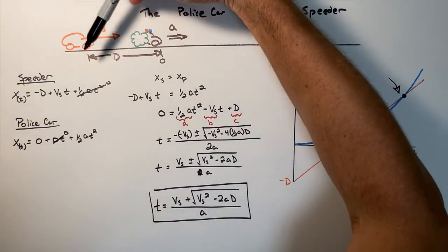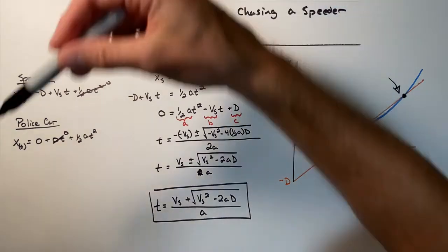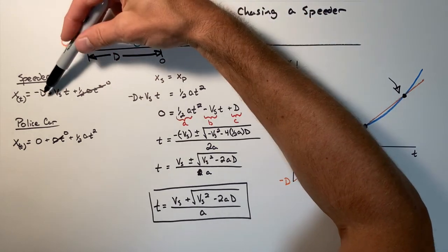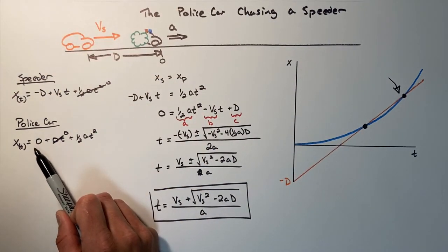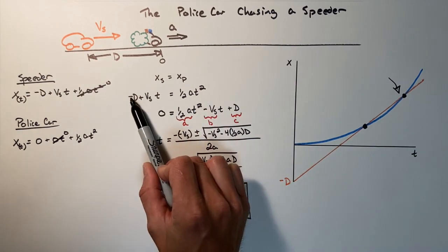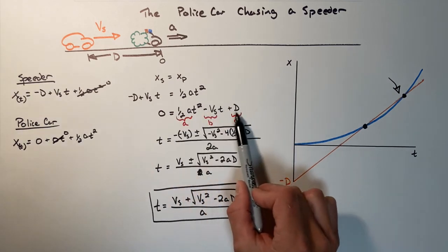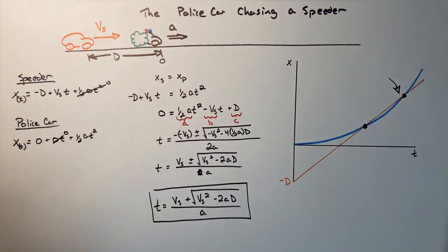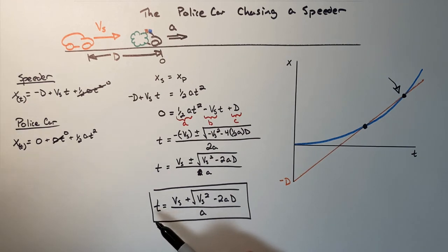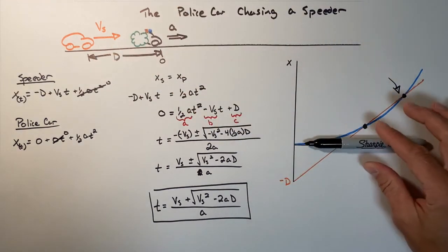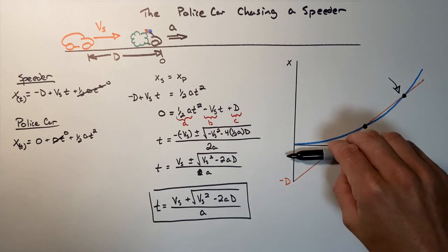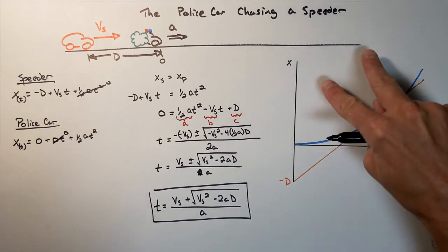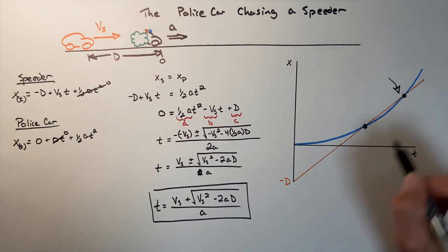Earlier I mentioned we could have called a different point position zero. Had I chosen the speeder's starting position as zero, the speeder would have had an initial position of zero but the police car would have had an initial position of positive d. That would have changed some terms, but ultimately all it does is shift where d appears — it cancels out in the next line anyway. Where we choose to call position zero is arbitrary; it does not affect the time at which the police car catches the speeder. Shifting the origin would shift the horizontal axis on the graph but would not change the points in time when the vehicles are at the same position.